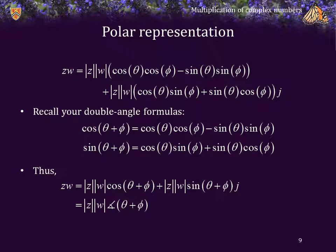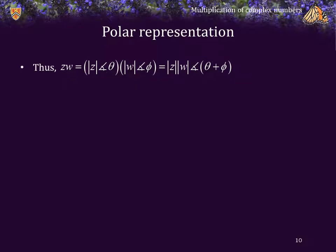So that's actually quite nice. The product is just the product of the magnitudes, and the angle of the result is simply the sum of the angles. Thus, the product of two complex numbers has the polar representation equal to the product of the two magnitudes with an angle equal to the sum of the two angles.